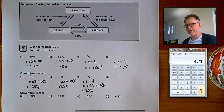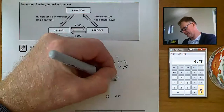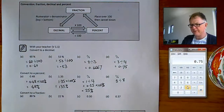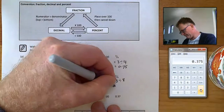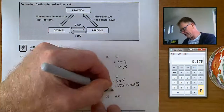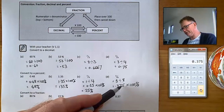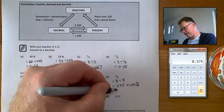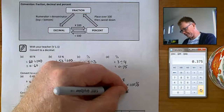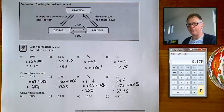3/8 as a fraction: change that to a decimal by going 3 divided by 8, which equals 0.375. Then times it by 100 to get the answer as a percentage — move the decimal place two positions to the right — giving 37.5%. Questions number four are going to be like these two.